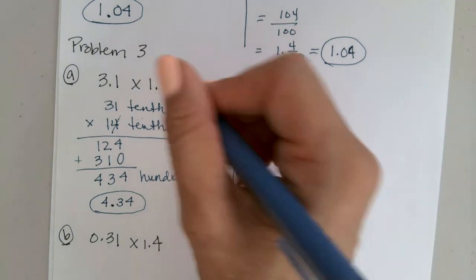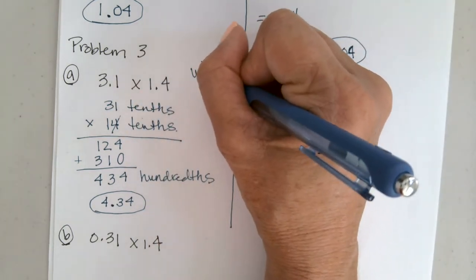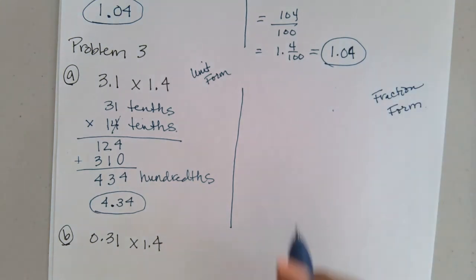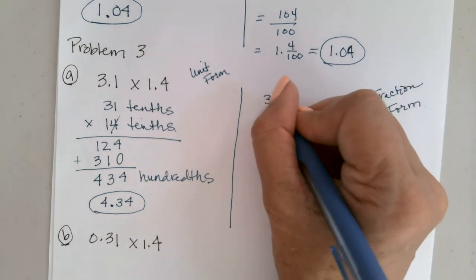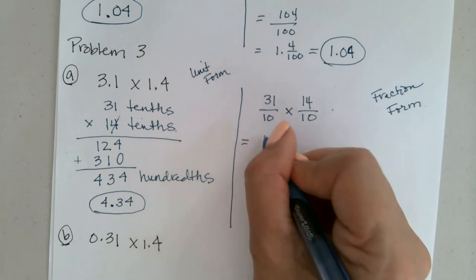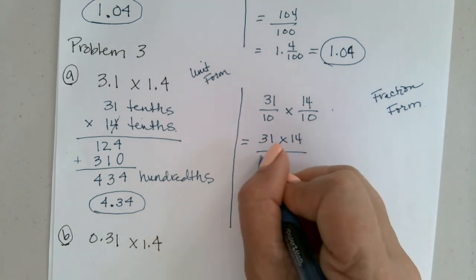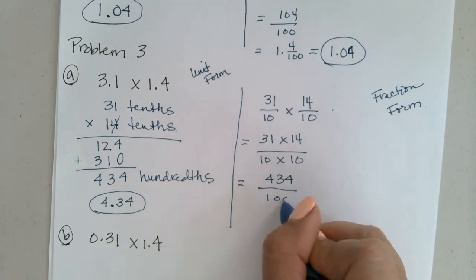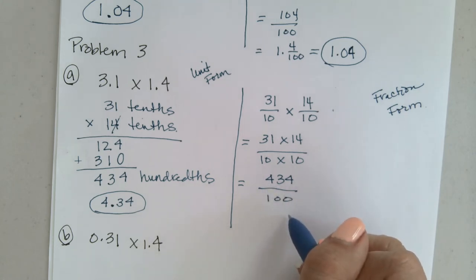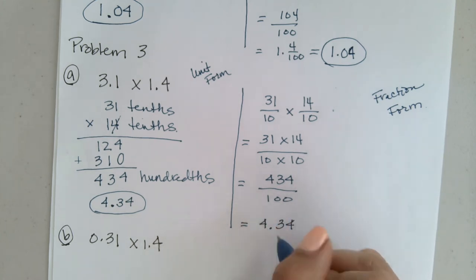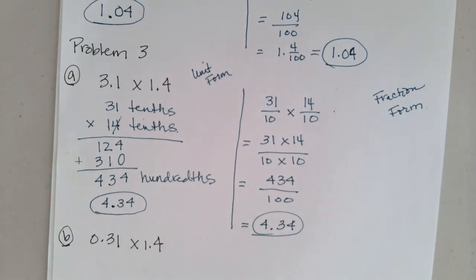Now try the fraction form. 3.1 becomes 31 tenths, so 31 times 14 over 10 times 10 gives us 434 over 100 — that's 434 hundredths. So the 4 sits in the hundredths place, 3 goes into the tenths, and 4 goes into the ones place: 4.34.